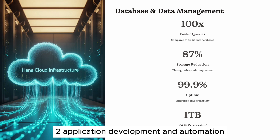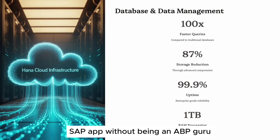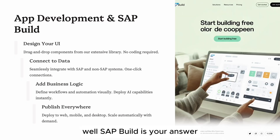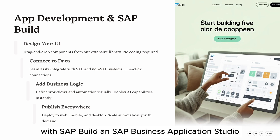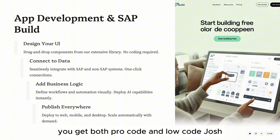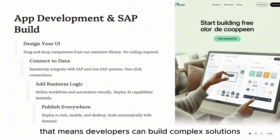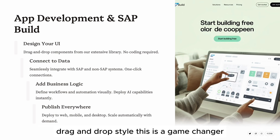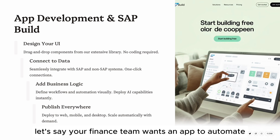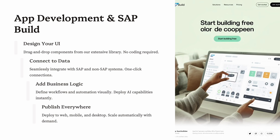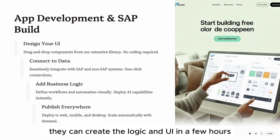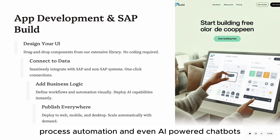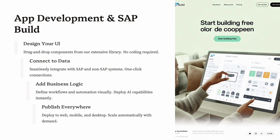Pillar 2: Application Development and Automation. Have you ever wished you could build an SAP app without being an ABAP guru? Well, SAP Build is your answer. With SAP Build and SAP Business Application Studio, you get both pro-code and low-code/no-code environments — meaning developers can build complex solutions while business users can build apps and workflows visually, drag-and-drop style. For example, your finance team wants an app to automate invoice approvals. They no longer have to wait three months for IT to develop it — with SAP Build, they can create the logic and UI in a few hours. This pillar also includes workflow management, process automation, and even AI-powered chatbots, all integrated into your SAP system.